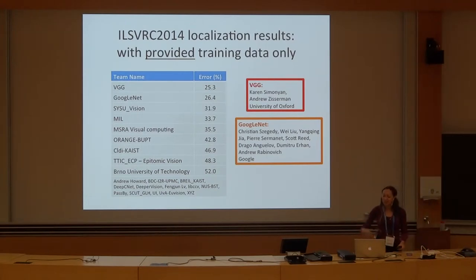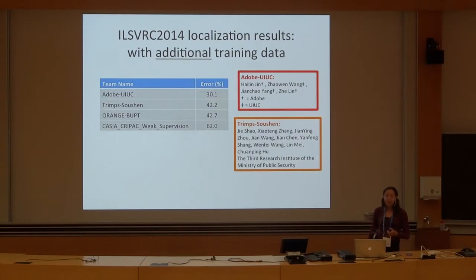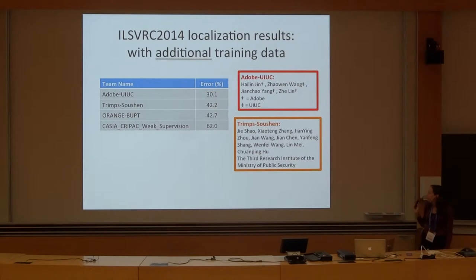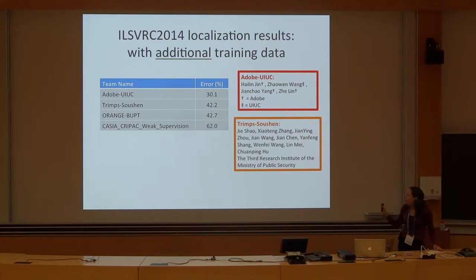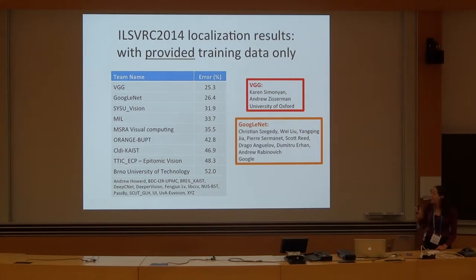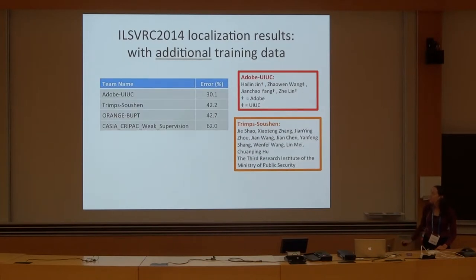There will be an awards ceremony later where we will acknowledge the winners again. There was also the other track where you could use additional training data. Here, the winner was the NOVA-UI-UC team and the runner-up was the CSU team that we heard a spotlight from earlier. It's interesting to note that for this task, the results were actually better for teams which were only provided training data.